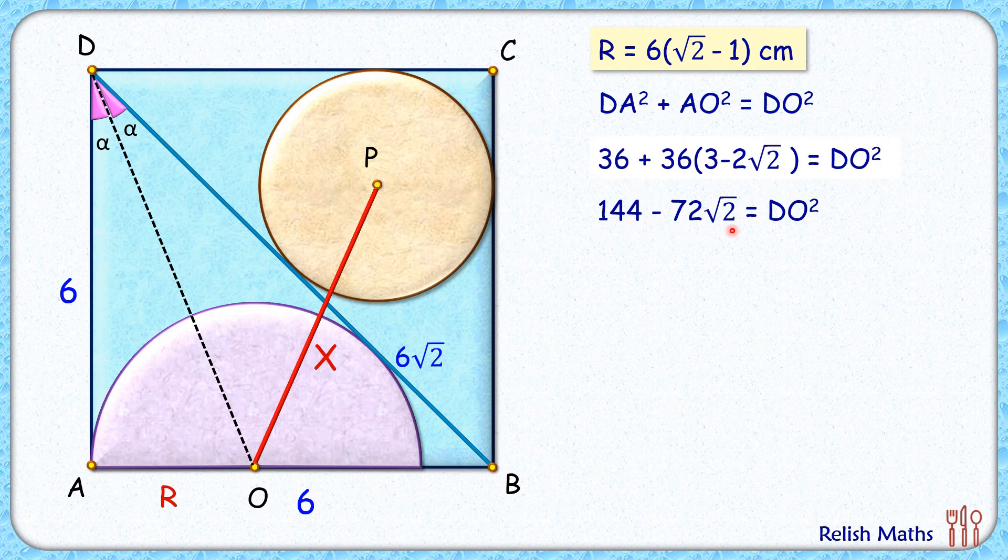We'll use this value later on. Now let's join DP. These are two tangents from the external point D, and by theorem this length DP will bisect this angle D. So if this angle on top is β degrees, then this angle will also be β degrees. Now together, 2β + 2α = 90°, so α + β = 45 degrees.